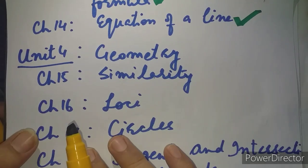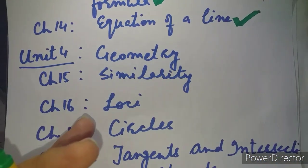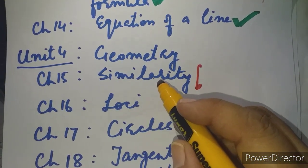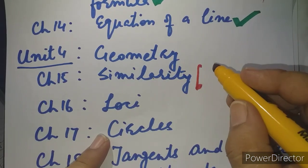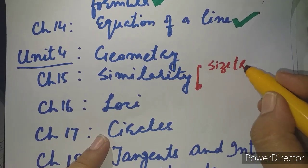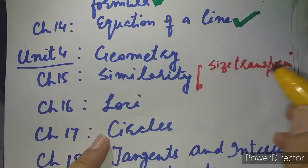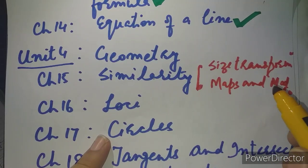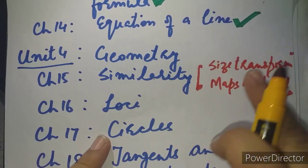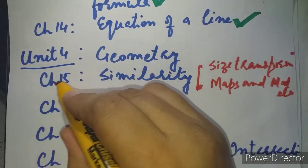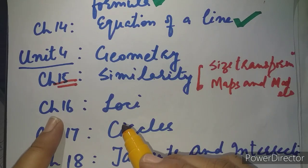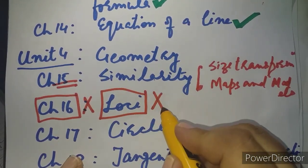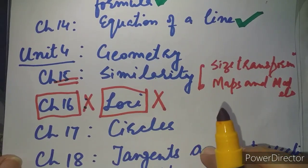Unit Number 4 is Geometry, consisting of four chapters: Chapter 15, 16, 17 and 18 — Similarity, Loci, Circles, and Tangents and Intersecting Chords. For Chapter 15, Similarity, the chapter is included but two major properties have been removed: Size Transformation and Application to Maps and Models. Chapter 16, Loci, has been totally excluded — completely removed from the new syllabus.